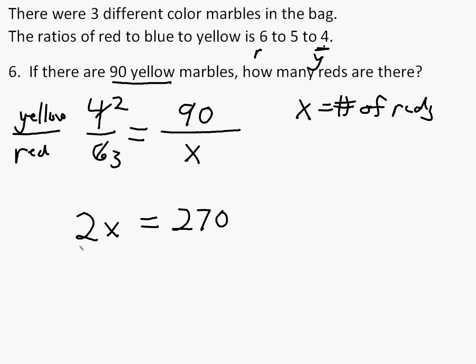And then dividing both sides by 2, you find your number of reds. You get x is equal to 135. So there's 135 reds in that case.